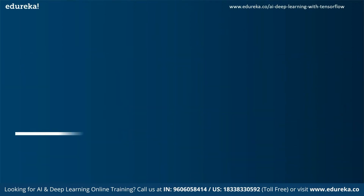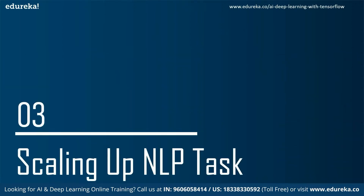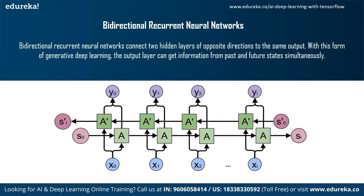To overcome the vanishing gradient problem, upgrades to RNNs were developed. Starting with bi-directional recurrent neural networks — these connect two hidden layers of opposite direction into the same output, so the output layer can get information from past and future states simultaneously. Bi-directional RNNs duplicate the processing chain so that input is processed in both forward and reverse time order, allowing the model to look into future context as well.